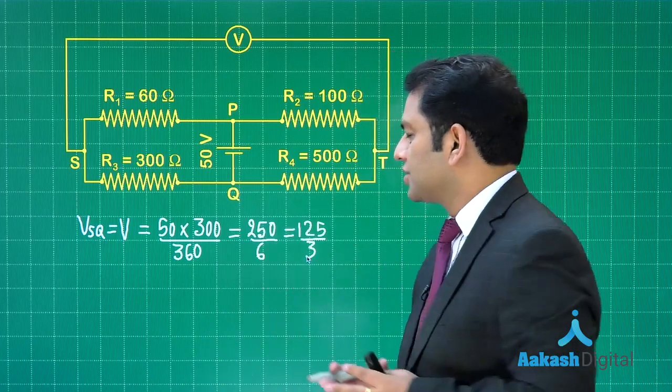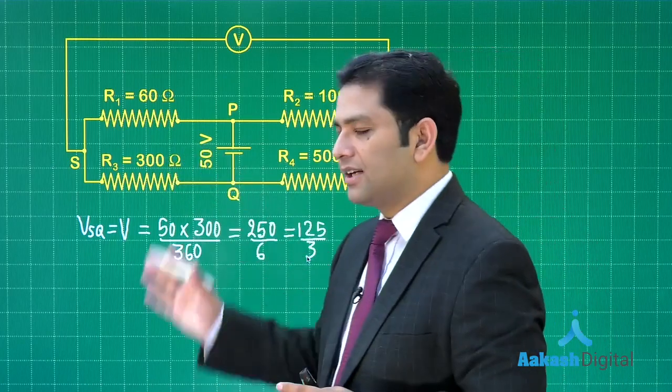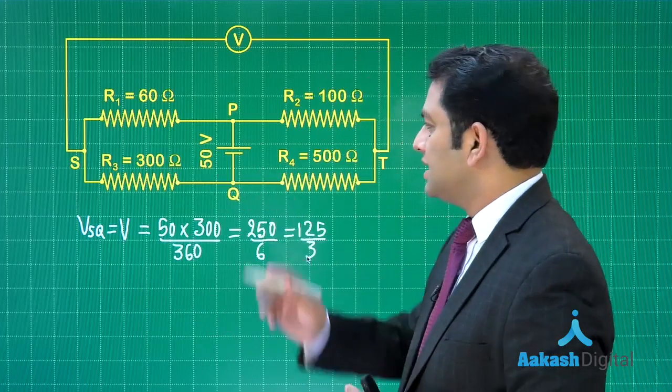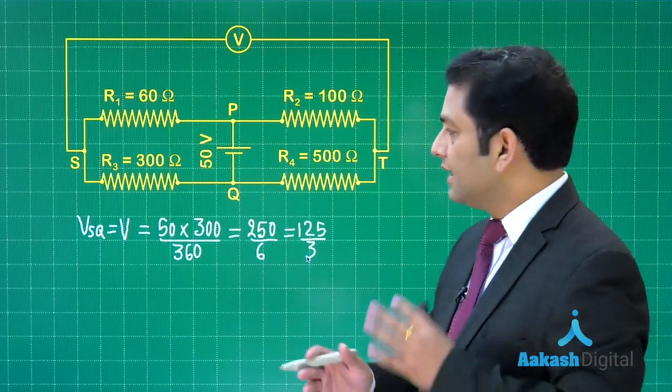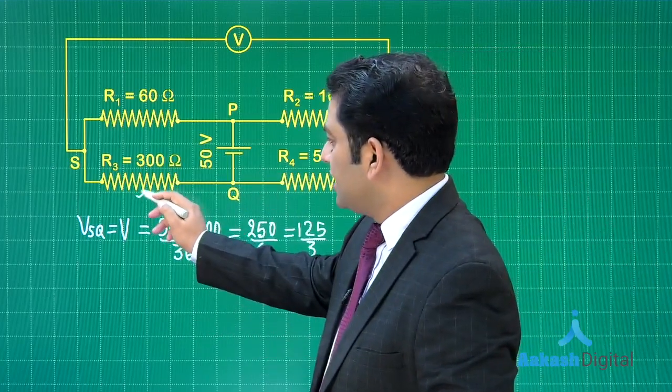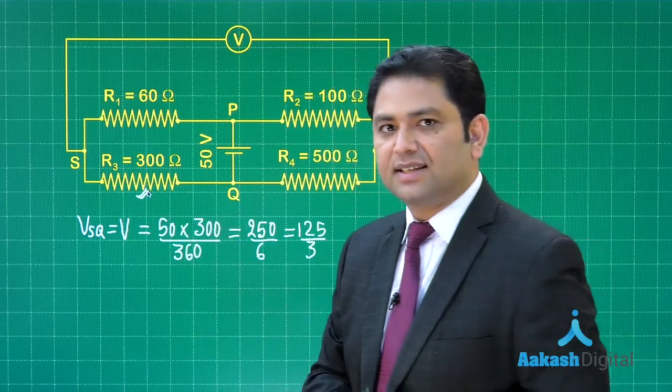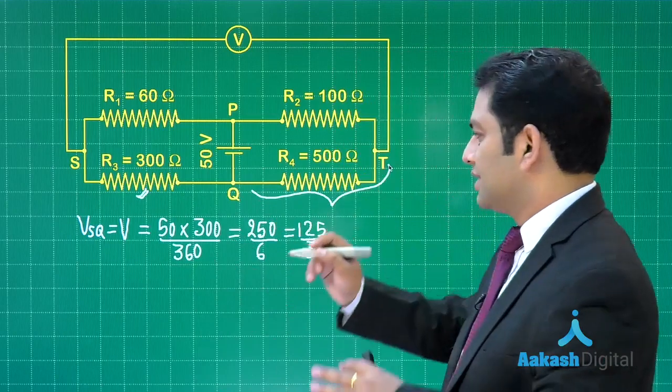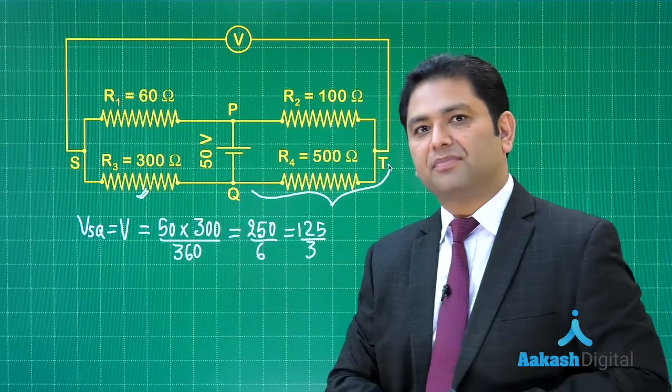So that is the initial potential difference between s and q, and the same potential difference is also there between t and q. Now this changes the value of resistance, but the potential difference between t and q would still be the same. Do you agree with that?